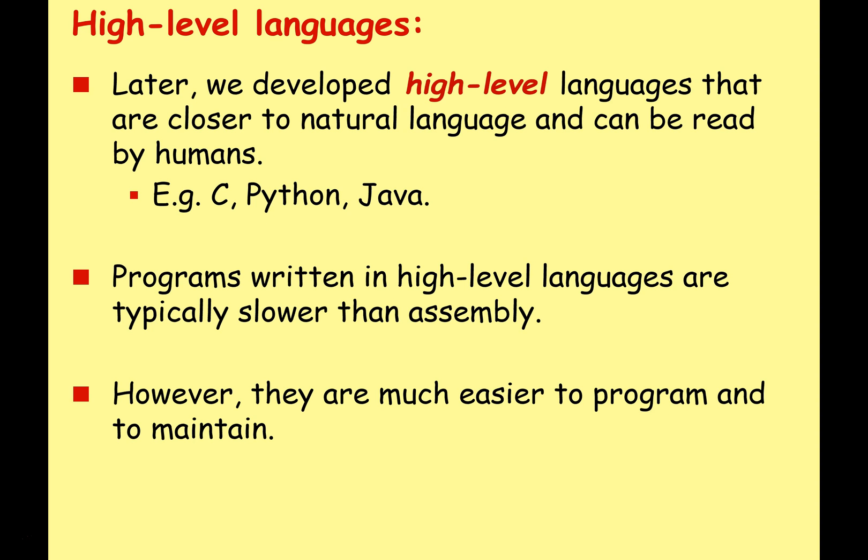Later, we developed higher-level languages much closer to natural language and much more easily read by humans — C, Python, Java, etc. Programs written in high-level languages are slower than assembly because they have to be converted into machine code, and this process isn't as efficient as assembly's one-to-one relationship. However, they are much easier to program and much easier to maintain, fix, and update. So though a program might run a little more slowly, it's much faster to develop, test, debug, and get working.